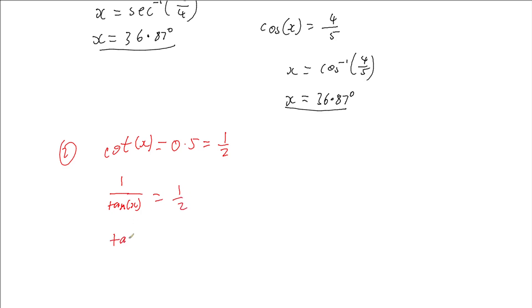So we want to know when is tan of x equal to 2, which means that we find out the inverse tan of 2. And putting that into our calculator, we get an answer of 63.43 degrees. So nice, quick, and easy.